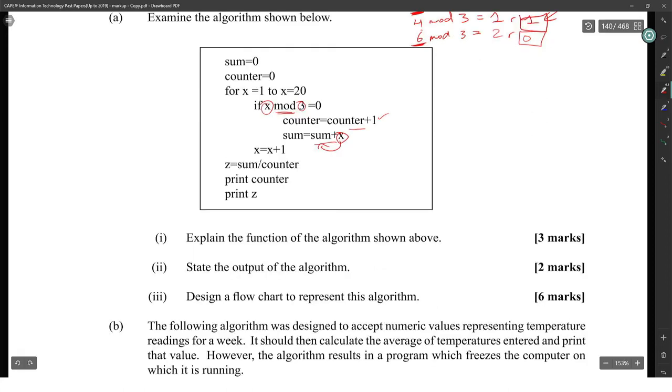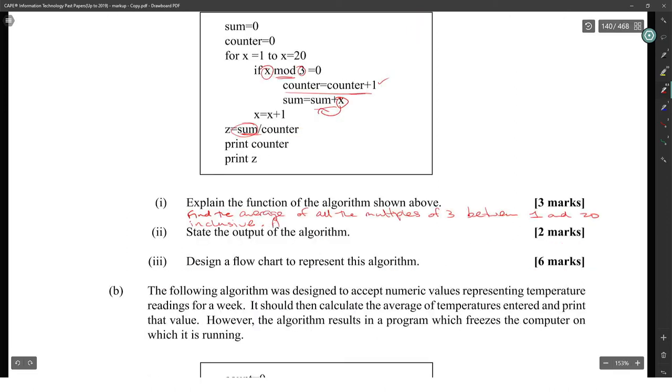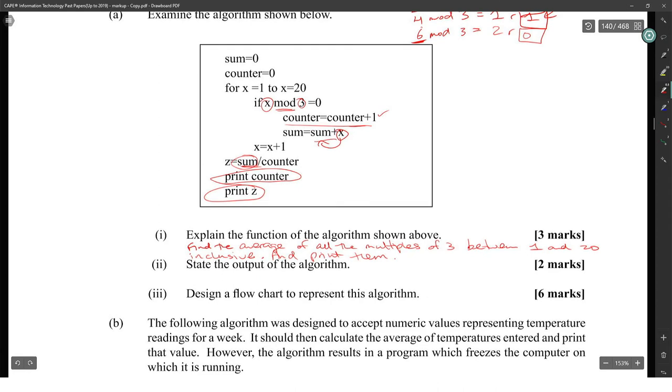The function of the algorithm is to find the sum, but then we divide by the counter, so that means we're trying to find the average, because we're dividing the sum by the counter. So find the average of all the multiples of three between one and twenty inclusive and print them. I forgot the print part, because you're printing the counter and z. The output of this algorithm is...